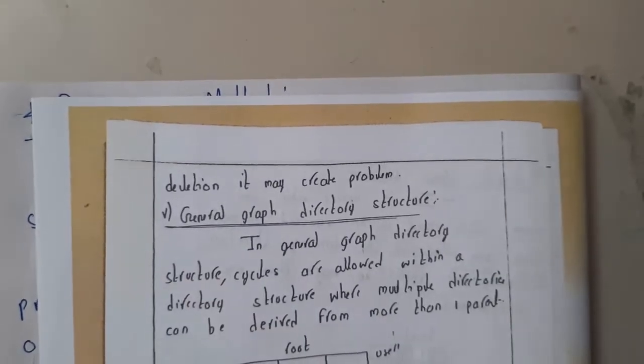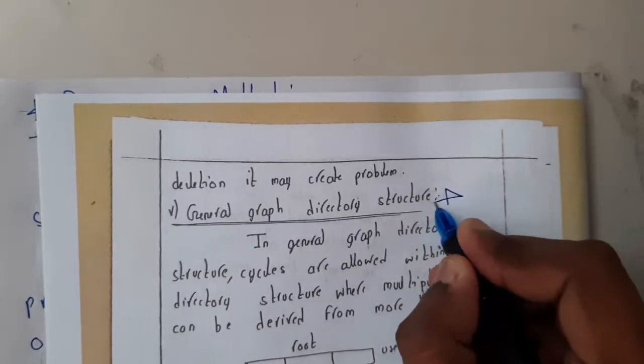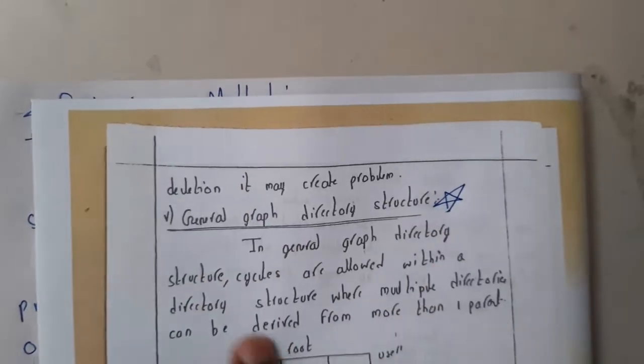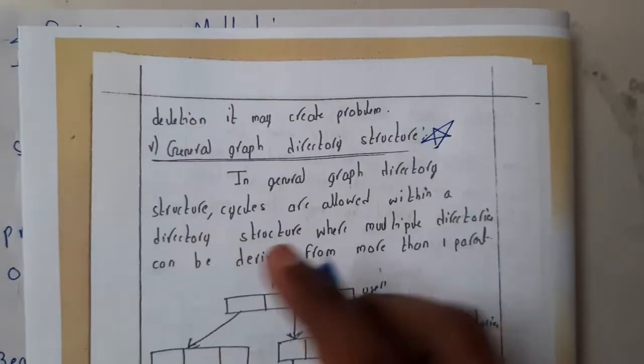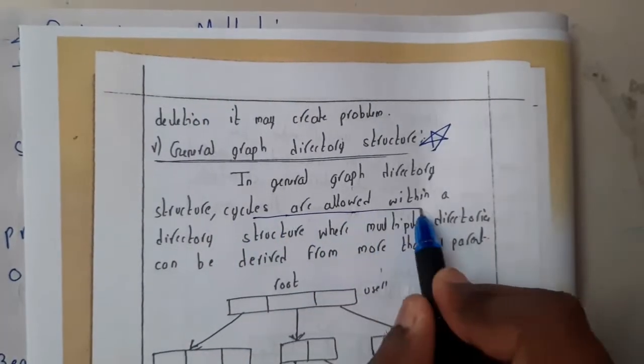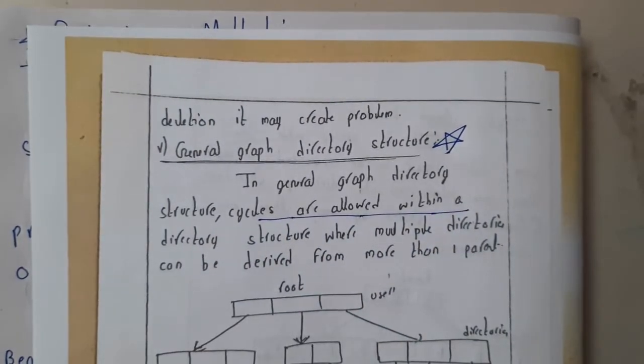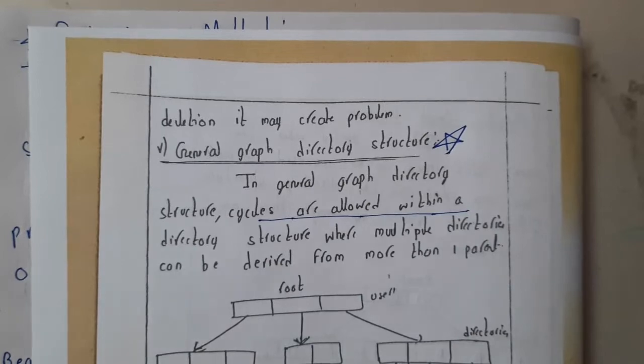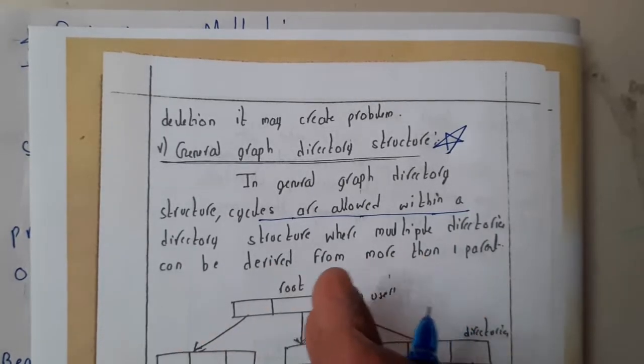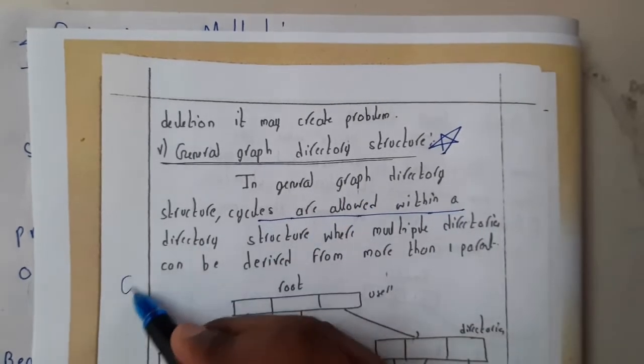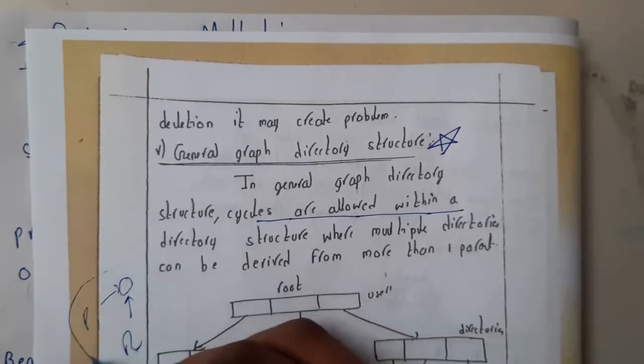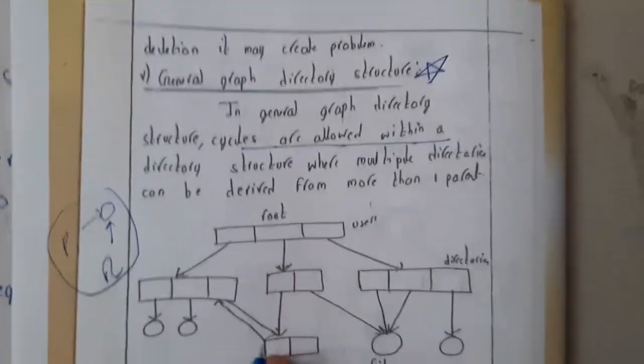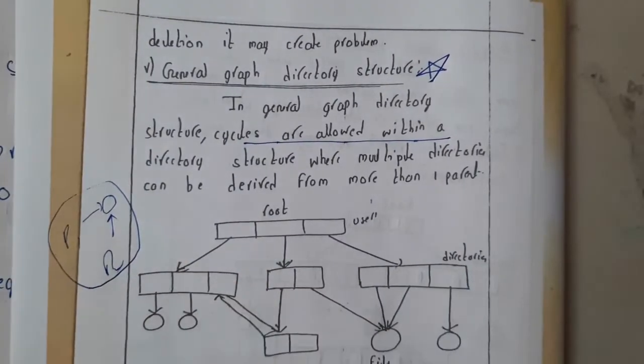Now let us go through the last type of directory structure, which we are using in our systems now. General graph directory structure. In general graph directory structures, cycles are allowed within a directory. You can move from one directory to another directory. Previously, we used to have one file and from multiple directories we used to access it, but here we can have access through directories itself directly.